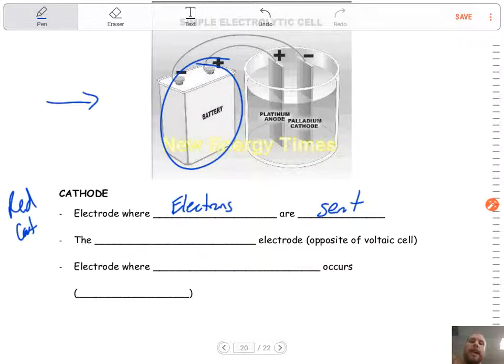This is where the battery is kick-starting the reaction. It's getting the electrons to go to this place. That means if the electrons are being sent here, this is the negative electrode. This is the opposite of a voltaic cell. So again, you've got to make sure you know the difference.